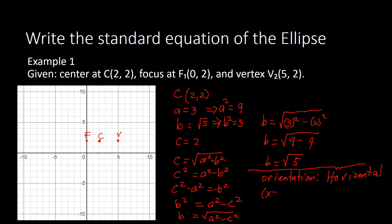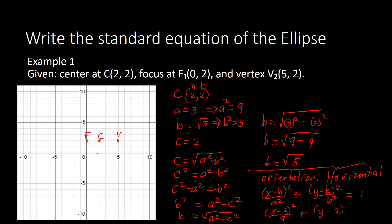So we use the form: (X − H)²/A² + (Y − K)²/B² = 1. Plugging in, we have H = 2 and K = 2, so: (X − 2)²/9 + (Y − 2)²/5 = 1. That is our standard equation of the ellipse.